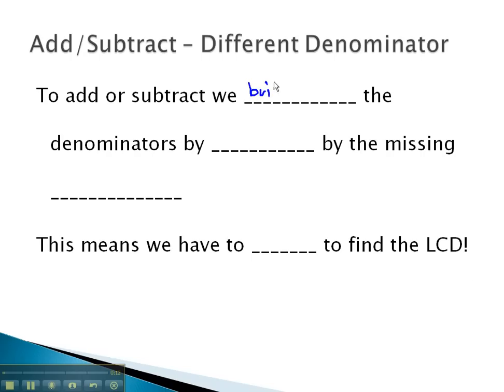We must build up the denominator by multiplying by the missing factors. Because we're multiplying by missing factors, it means we may have to factor in order to find the LCD. Let's take a look at some examples where we have to do just that.